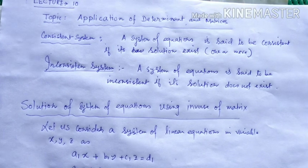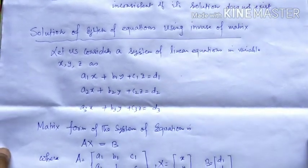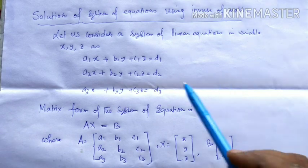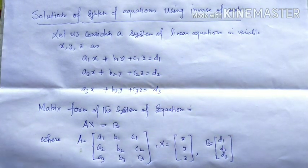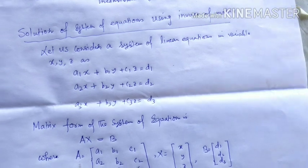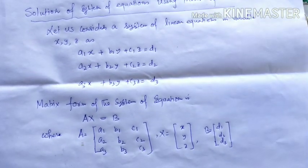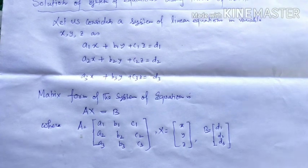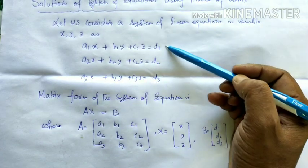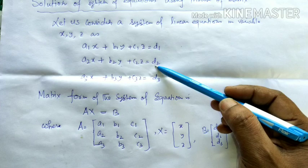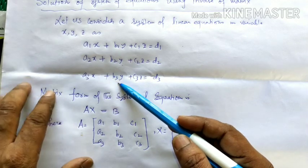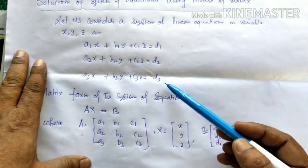Let us consider a system of equations in three variables x, y, z. The first equation is: a₁x + b₁y + c₁z = d₁. The second equation is: a₂x + b₂y + c₂z = d₂. And the third equation is: a₃x + b₃y + c₃z = d₃.